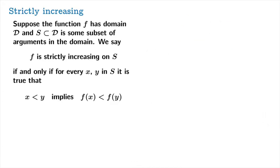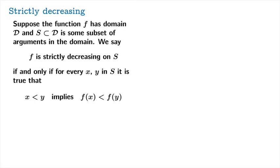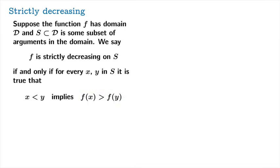Clearly, the definition for decreasing can't be all that different. For strictly decreasing, we really only need to change one tiny but critical detail: we're going to demand that f of x is greater than f of y. In other words, whenever you choose arguments within s that move from left to right, the value needs to go down.